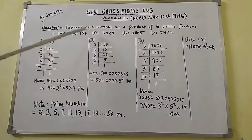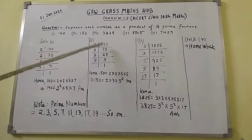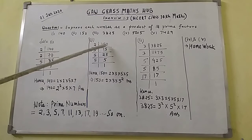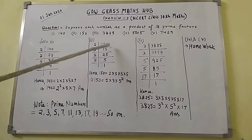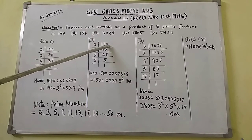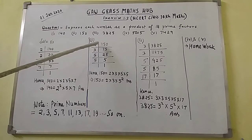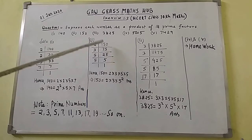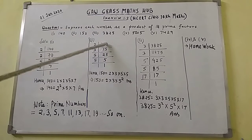Now for Roman (ii), write down the number 150. The digit at the unit place of 150 is 0, so it can easily be divided by 2. Divide by 2; the result is 75. So 75 × 2 = 150.